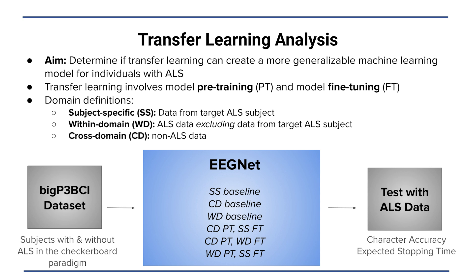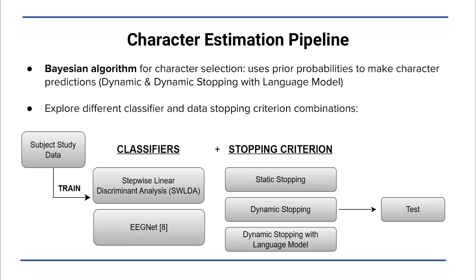The three data domains for model training include study-specific, which is data from the target ALS subject; within-domain, which is data from individuals with ALS excluding data from the target ALS subject; and cross-domain, which is data from individuals without ALS.